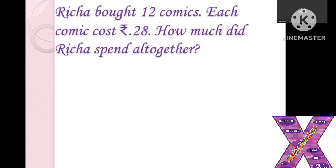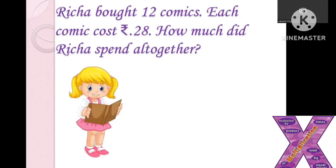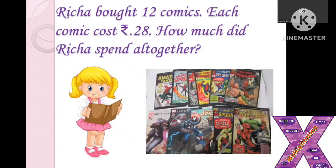Richa bought 12 comics. Each comic cost rupees 28. How much did Richa spend altogether? How much did she pay for those 12 comic books? One comic book is 28 rupees, so she buys 12 comic books, meaning 28 should be added 12 times. Since the same number is being added repeatedly, we can use multiplication instead of repeated addition.